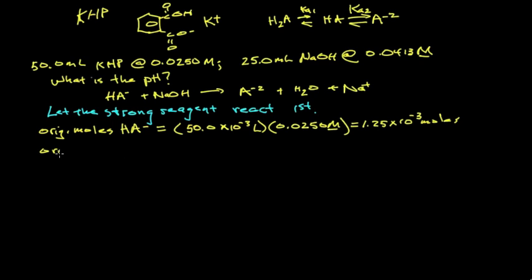The original number of moles of sodium hydroxide equals 25 milliliters, or 25 times 10 to the minus 3 liters, times 0.0413 molar, which gives 1.0325 times 10 to the minus 3 moles.